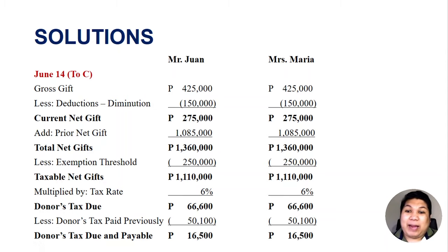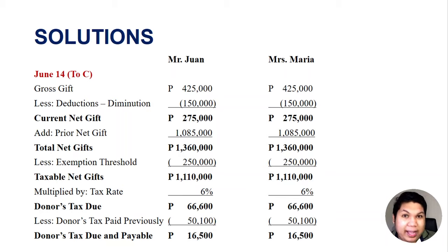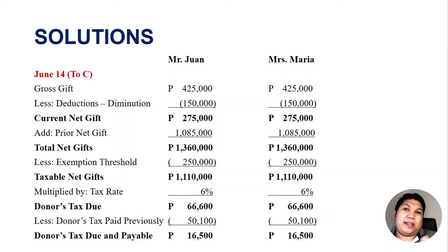This is how it is presented in the BIR Form 1800, the donor's tax return form. But for school problems like quizzes and exams, you can use the shortcut: just multiply the current net gift by 6% to get P16,500. That's how it works — it's a repetition of the process.